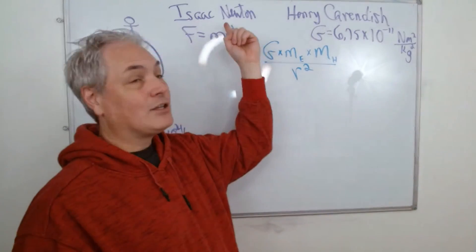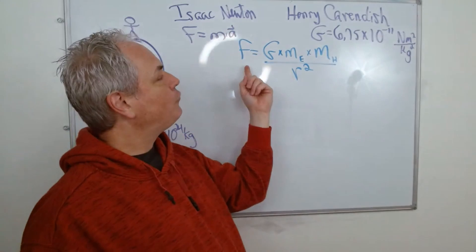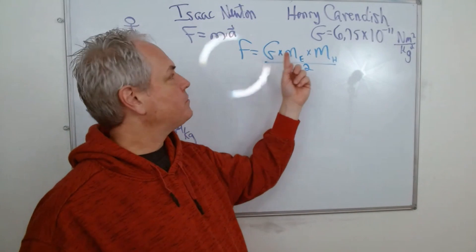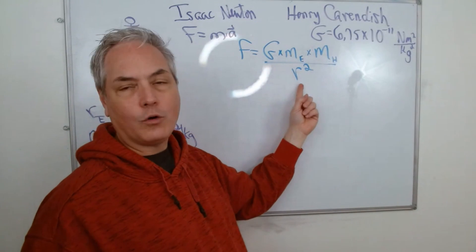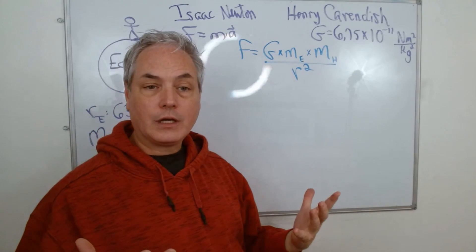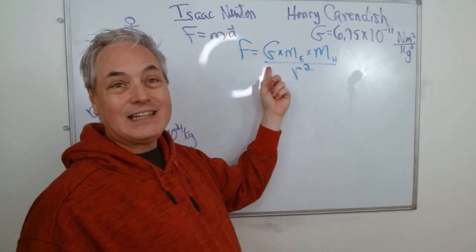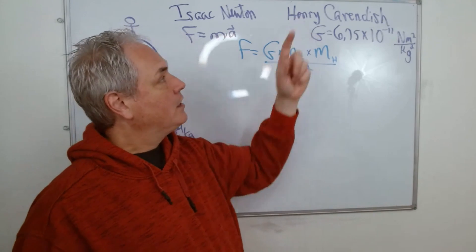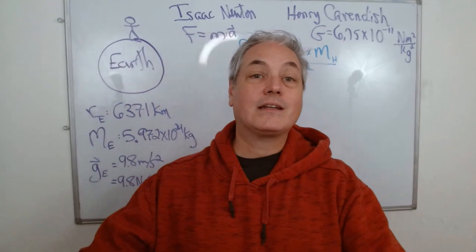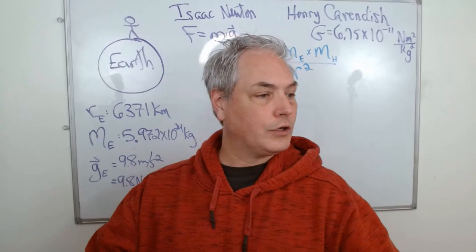So here the other equation is F equals G times the mass of the Earth times the mass of the human over the radius squared. I know that Isaac Newton had mentioned that the force was always with respect to the mass of the objects over the radius squared. It was a proportional relation, but he did not know what G was all about.